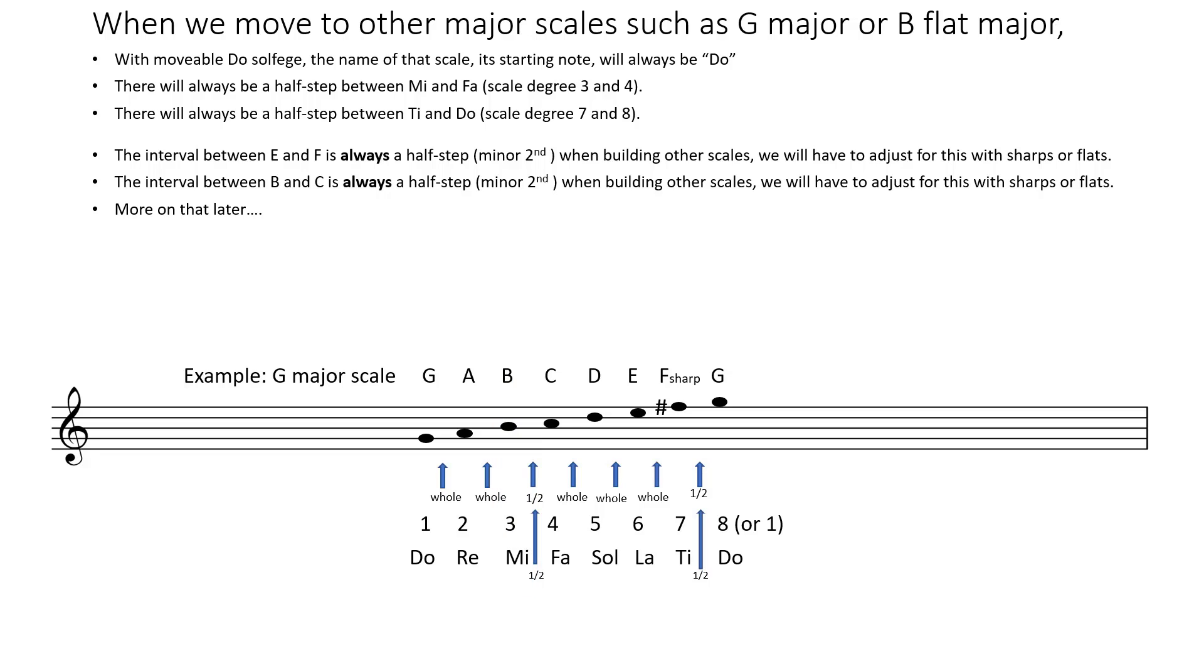Mi or 3 is B, a whole step above A. Between 3 and 4 we need a half step. It just works out that B to C is a naturally occurring half step so we're good there. From C to D which is 4 to 5 or Fa to Sol, we need a whole step and that's in fact what we've got.